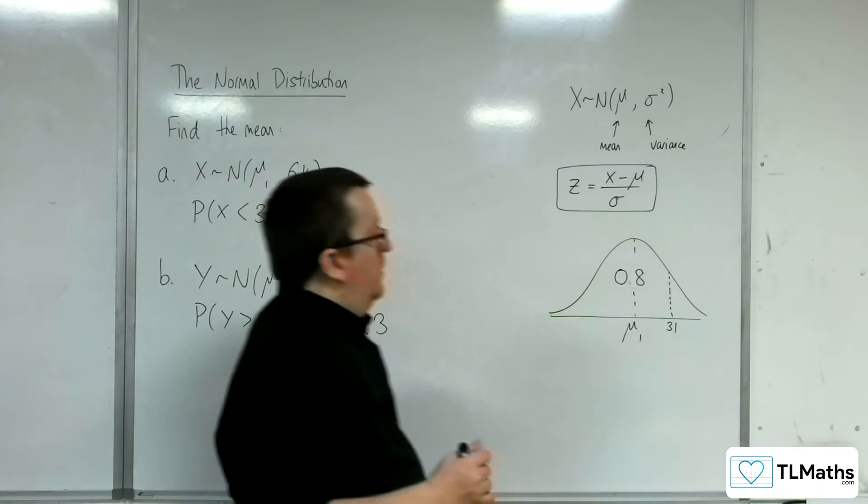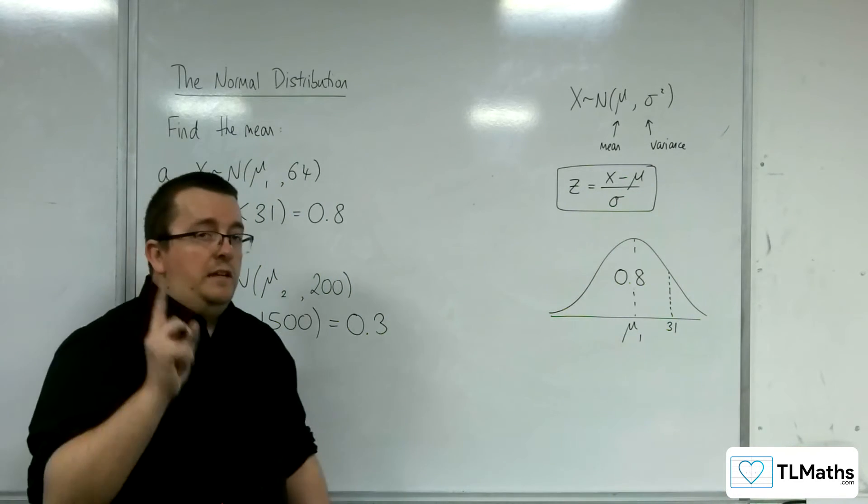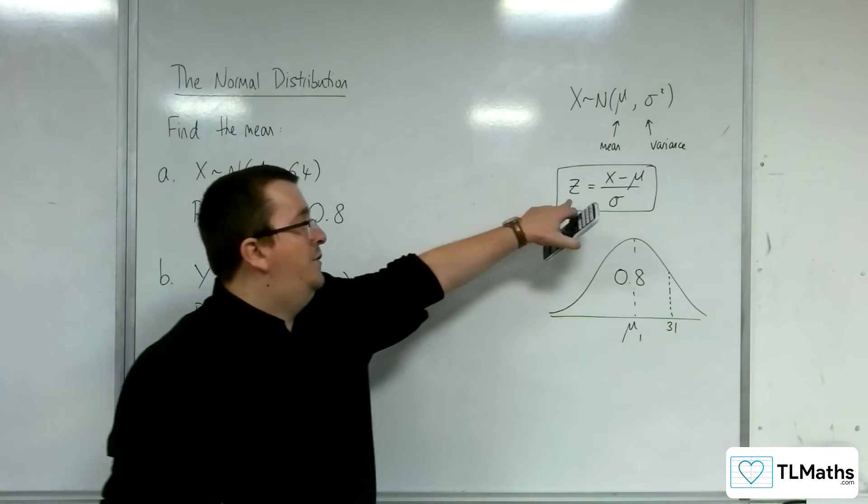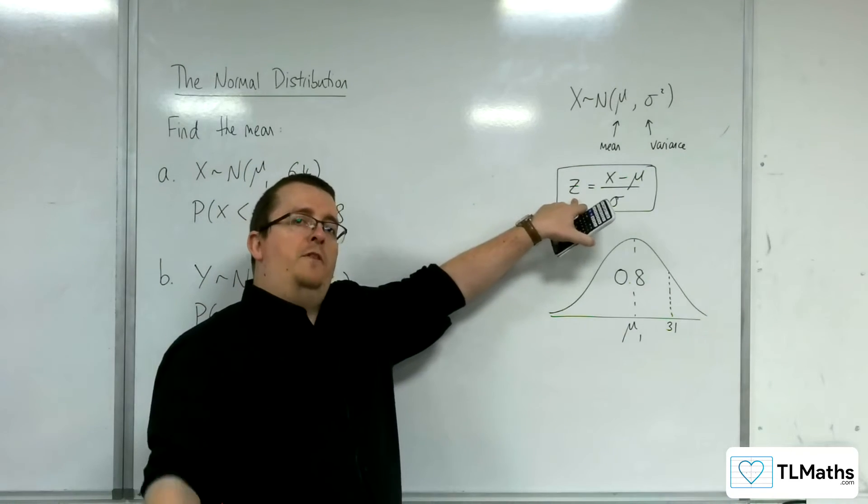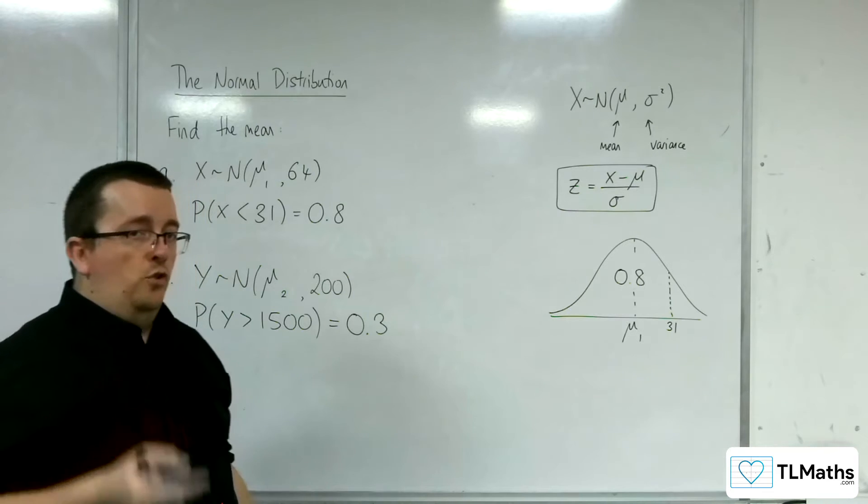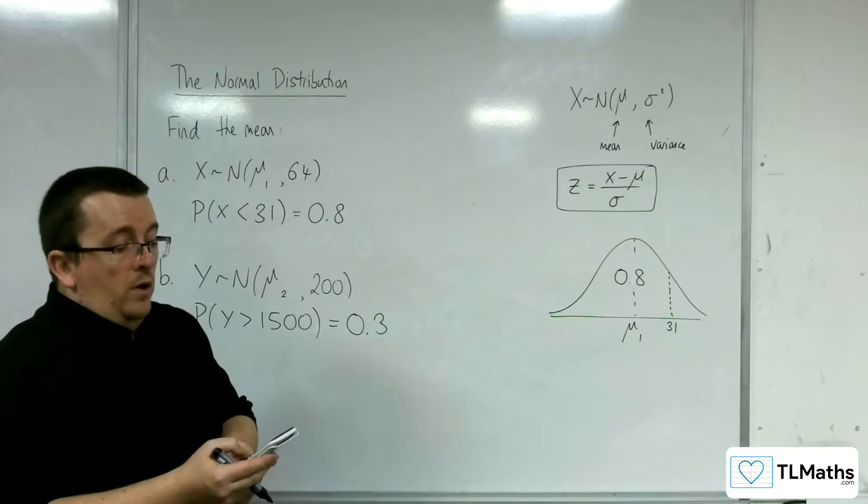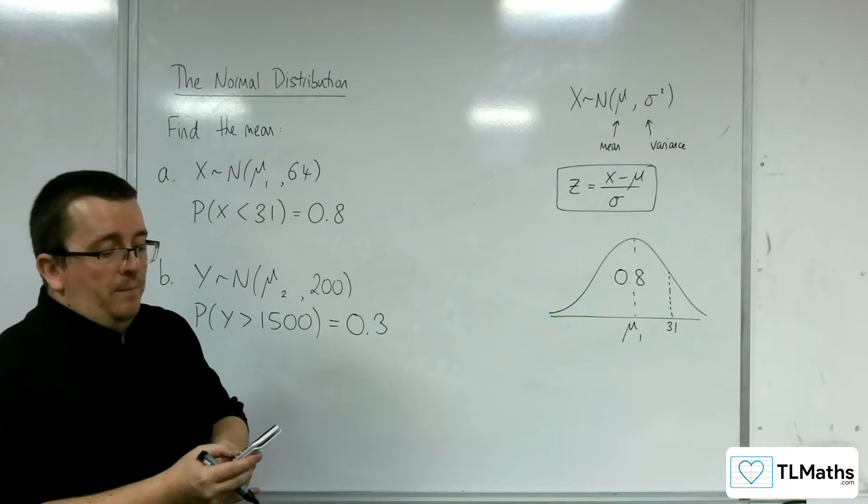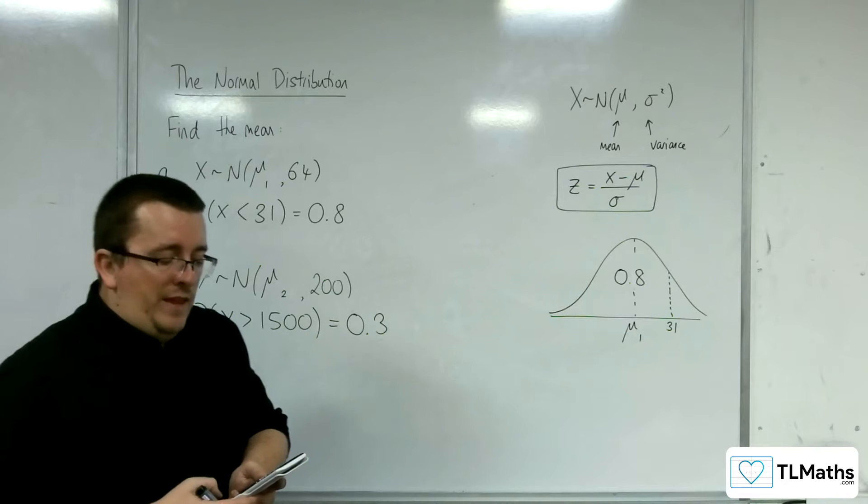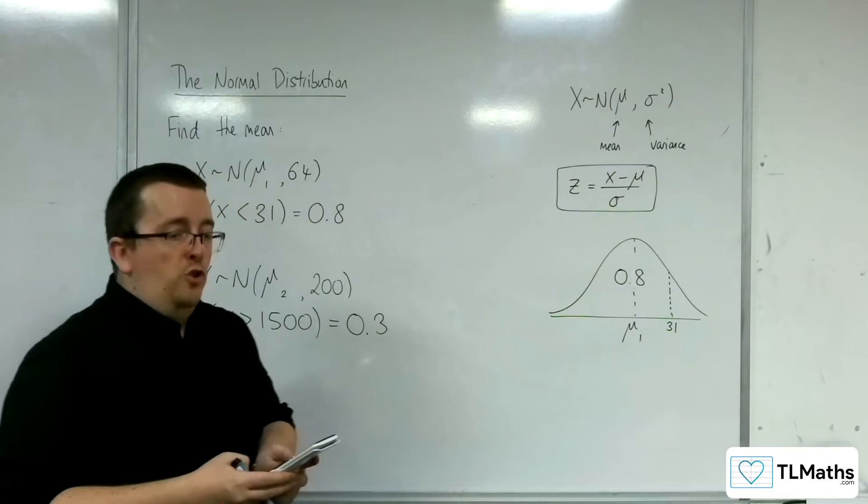Now, to use my calculator here, I'm going to use my calculator to work out the z value. You're using the standard normal. So go to menu, and then number 7, and then you're going to be using the inverse normal button.